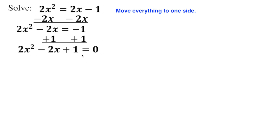Now what I can do, because it's equal to zero, nothing else is on the side now, I can plug it into the quadratic formula. And remember that the quadratic formula is negative b plus or minus the square root of b squared minus 4ac all over 2a.